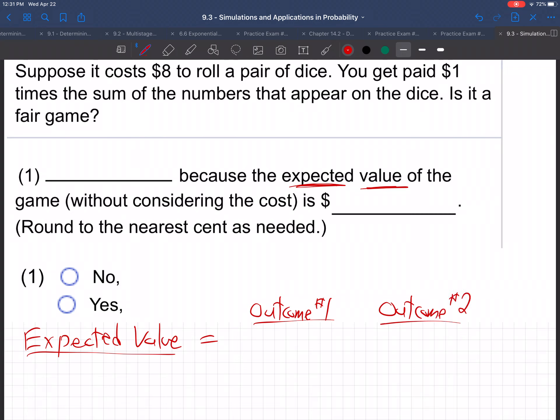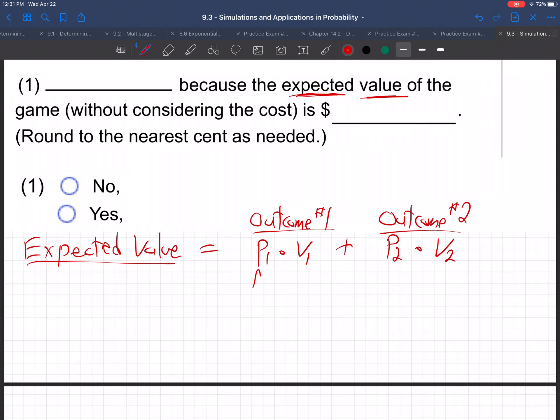And that is probability one times value one, plus probability two times value two, where the P's are the probability of outcome number one, and the V's are the dollar value of the various outcomes, for however many outcomes you have.